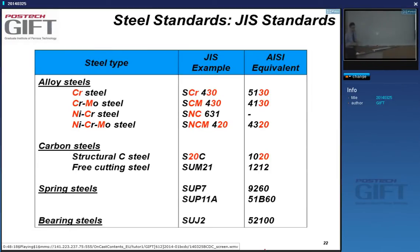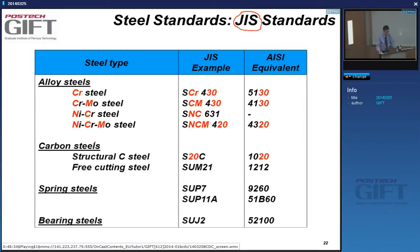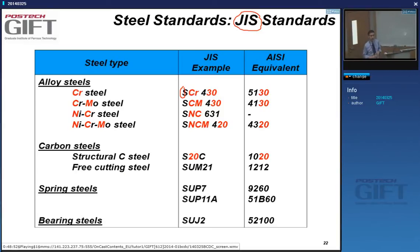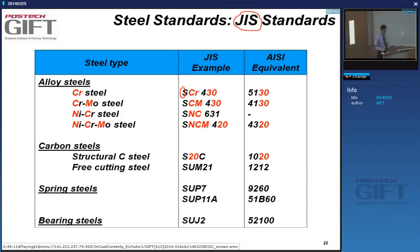Now let's go into the standards themselves. For JIS standards, the grade specifications for steels all start with S. JIS also normalizes copper alloys, aluminum alloys, magnesium alloys, plastics, etc. For alloy steels you can instantly recognize chrome, chrome-moly, nickel-chrome, and nickel-chrome-moly grades. By comparing grades you can define equivalents with AISI steels.